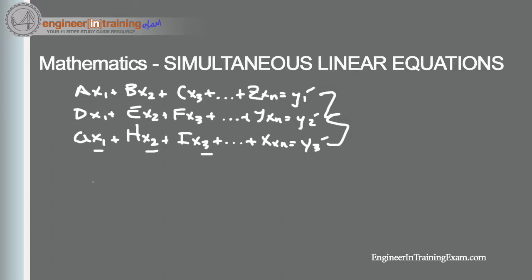If we're given any set of linear equations in this format, we can express it in a compact matrix form Ax equals y, where A is a square matrix with as many columns as there are unknowns and rows as there are equations. X is a single column vector matrix with as many rows as there are unknowns, and y is also a single column matrix with as many rows as there are known y values.